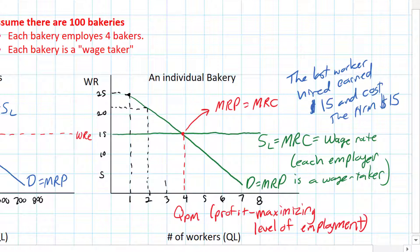Notice again that the third worker also earned the firm revenue in excess of the cost of hiring that worker. Therefore, it was a good idea to hire that worker. What about the fourth worker?